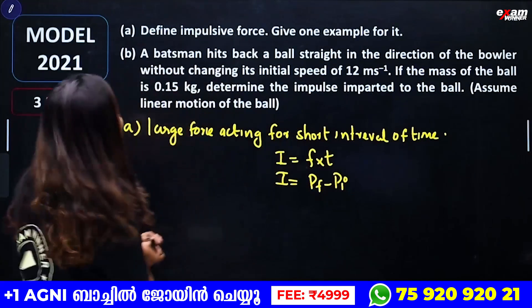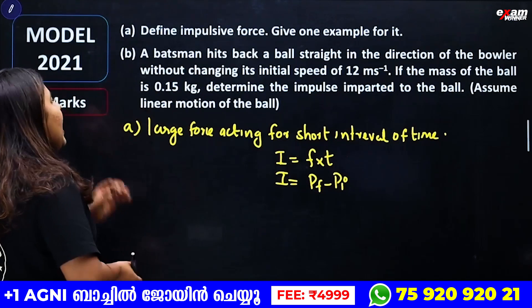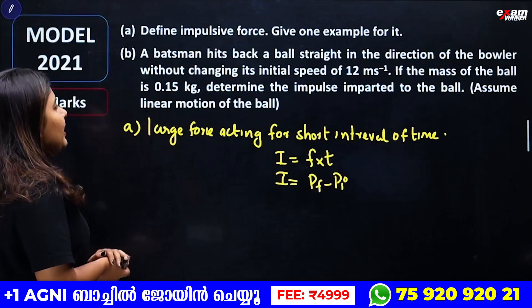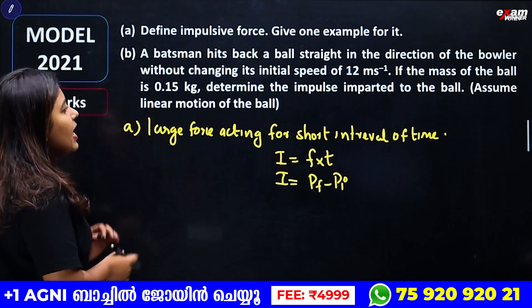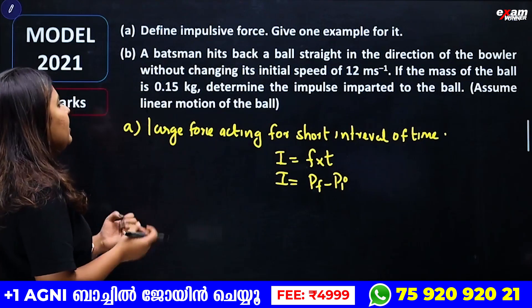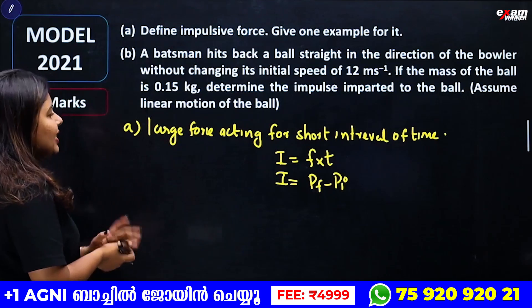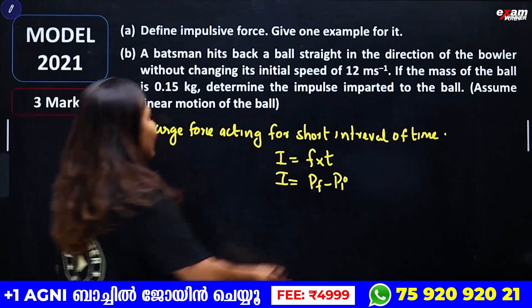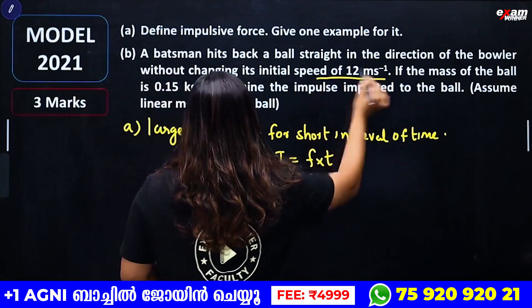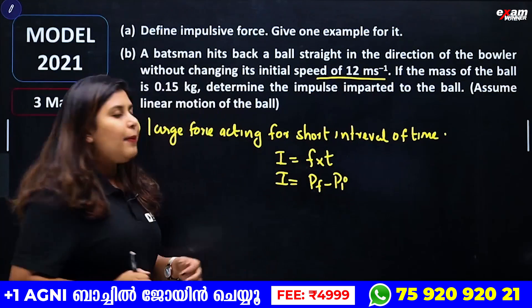Now consider this problem: A batsman hits a ball straight back in the direction it came from, without changing its initial speed of 12 metres per second.